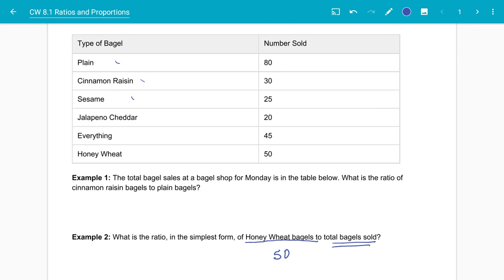So that would include the plain, the cinnamon, the sesame, the jalapeno, the everything bagel, and honey wheat, because that's part of the total sold.